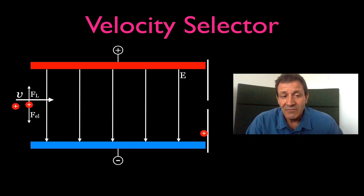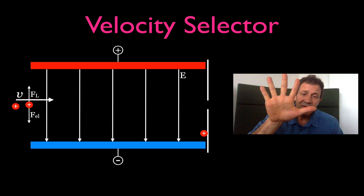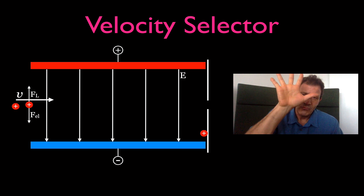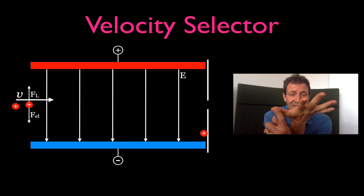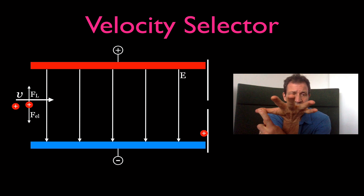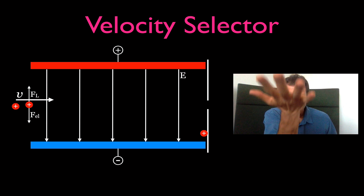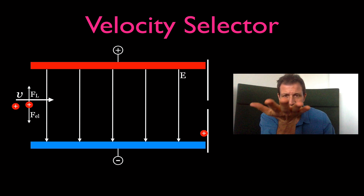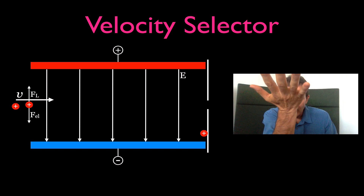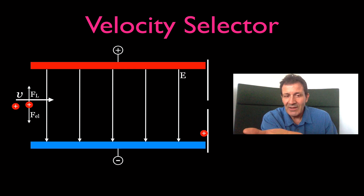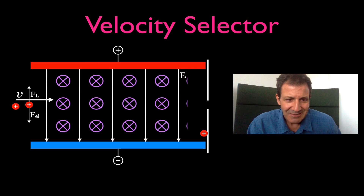We want the charged particles to feel the force in the upward direction. To figure out the direction of the magnetic field, we use the right-hand rule. The thumb points in the direction the charged particles are moving. Your palm represents the force — in this case, the force is going up. Your fingers represent the magnetic field, and the magnetic field is going to be pointing into the page. So in order to get an upward force from the magnetic field, we orient the magnetic field so it points into the page.